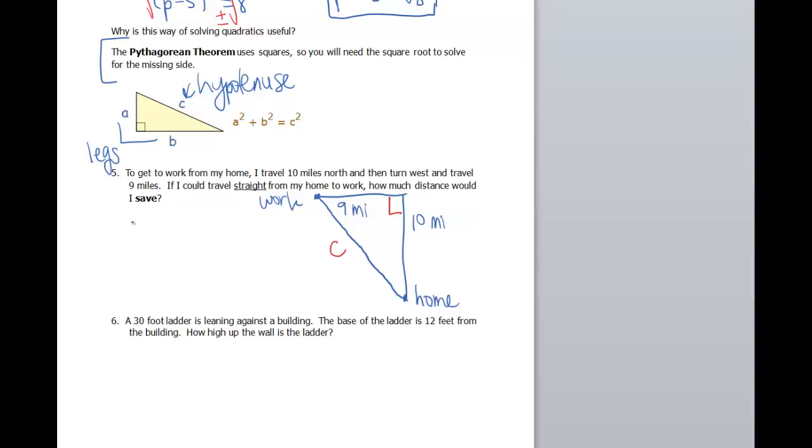So setting up my Pythagorean theorem, that would give me 9 squared plus 10 squared equals C squared. So 9 squared is 81, 10 squared is 100, C squared we don't know yet. If you add, 181, that gives me 181, it's gonna be my value for C squared.